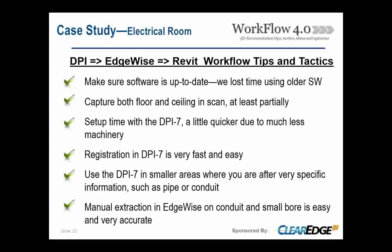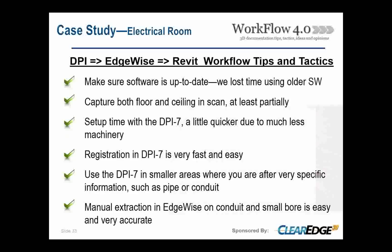Because of the small size of the conduits we were trying to pull out, manual extraction ended up being more accurate for us. For the larger pipes and ductwork, the automatic extraction would have been better. The DPI-7 does not like planar surfaces, so we had to place targets along vertical walls and flat surfaces to maintain tracking and keep everything together, providing good differential between areas so the scanner could track the scan more reliably.